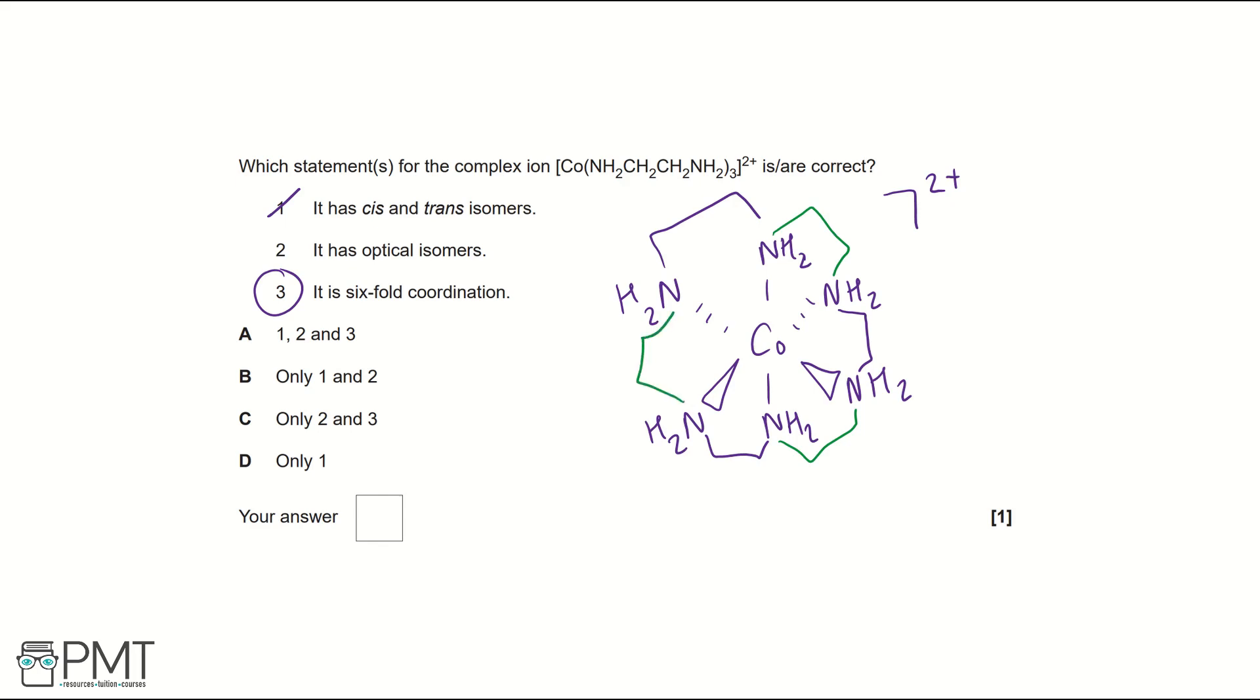Well, it's not one, so we can cross out A, B, and D. So it must be C, and this does track with us saying it has optical isomers and six-fold coordination. So what we are thinking does match the options.